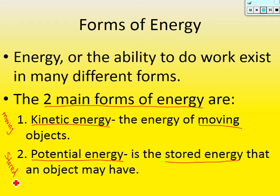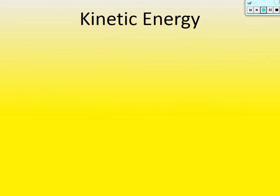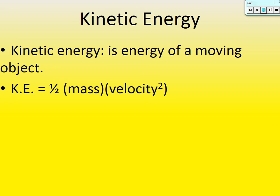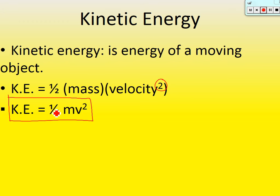Let's start with kinetic energy first. Kinetic energy is the energy of a moving object. How would you calculate it? Kinetic energy is calculated as one-half the mass of the object times the velocity of the object squared. Always remember to square the velocity. KE = ½mv². If velocity is zero, kinetic energy is zero, because anything times zero is zero. It's got to have some velocity in order to calculate kinetic energy.